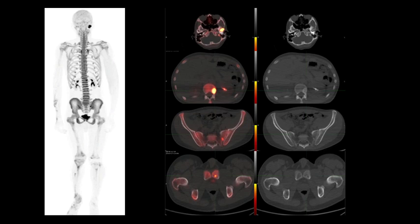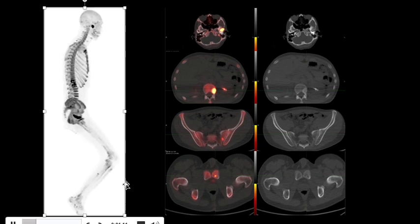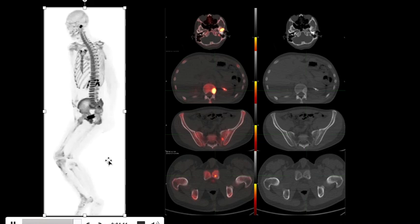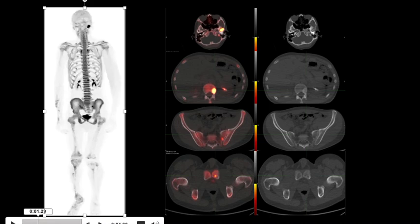Hi, this is Piyush Bhargava and I have an interesting case to share with you. We are looking at multiple images from a patient with history of osteosarcoma. Let's start by reviewing the whole body rotating image. This patient had a sodium fluoride PET CT scan and on this rotating image we find multiple foci of increased uptake.